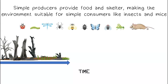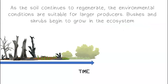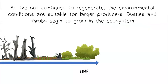Simple producers provide food and shelter, making the environment suitable for simple consumers like insects and mice. As the soil continues to regenerate, the environmental conditions are suitable for larger producers.